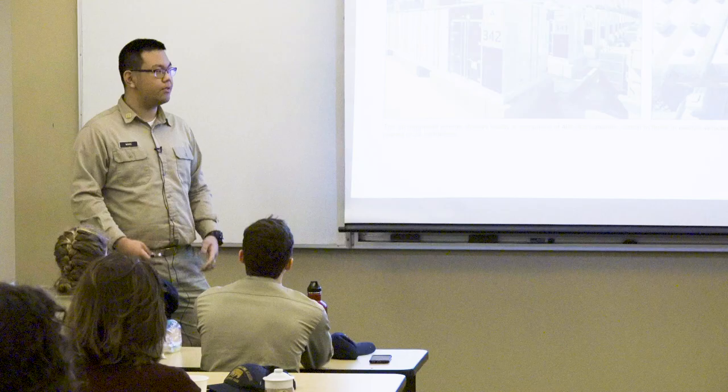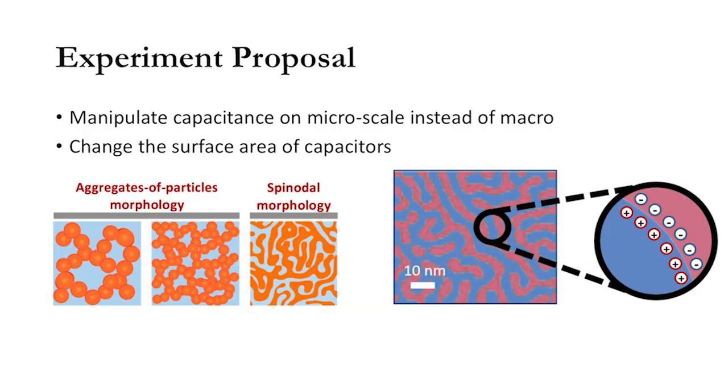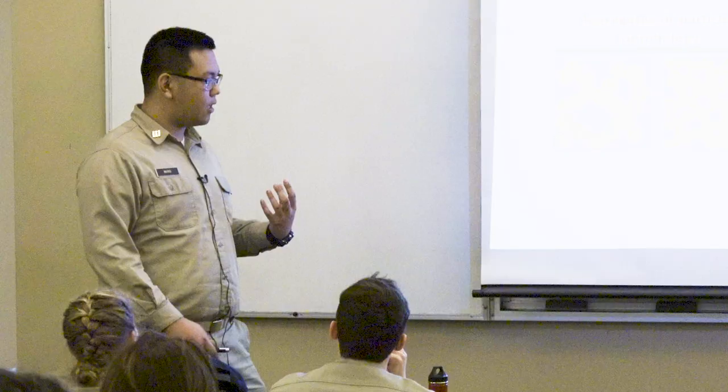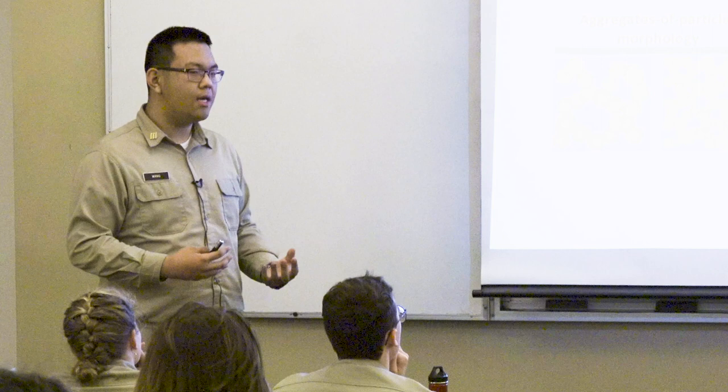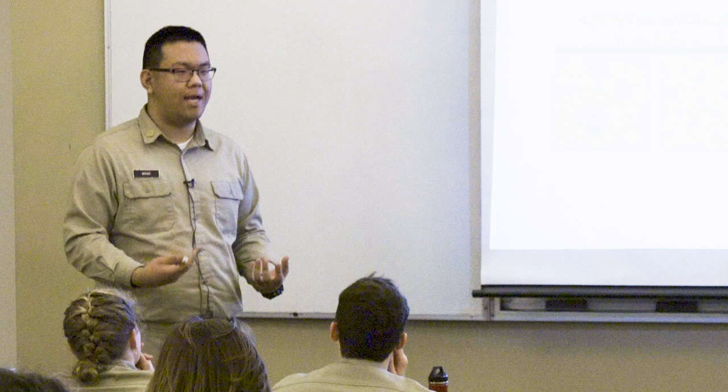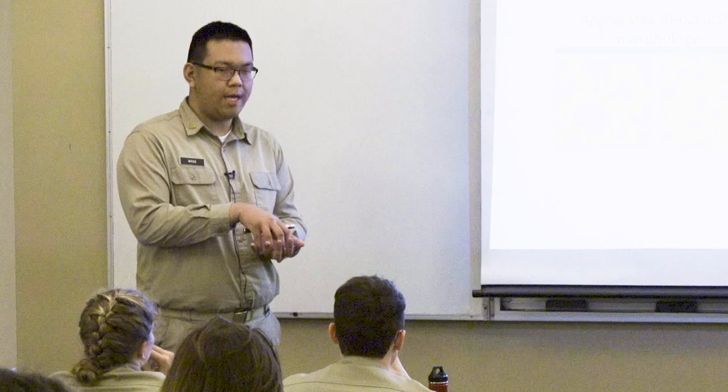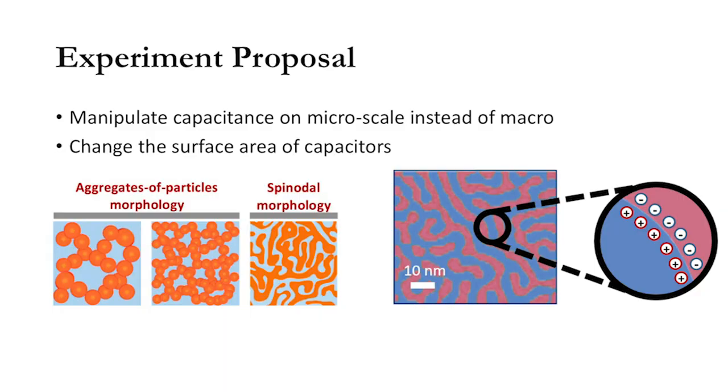This is our experiment proposal. We're trying to manipulate the capacitor plates on the nanoscale, microscale, something really small instead of on a macro. The idea is to combine two materials into something that looks like this, almost like a labyrinth. By doing this, it increases the surface area, and that's one of the things we need to increase capacitance. The idea is we take two materials or two phases that aren't really consistent with each other and combine them together. By doing that, we get spinodal morphology, so we get the most surface area out of combining two really different phases.